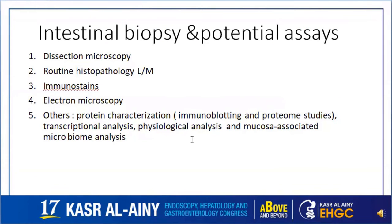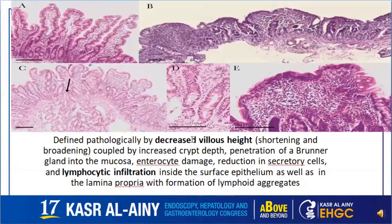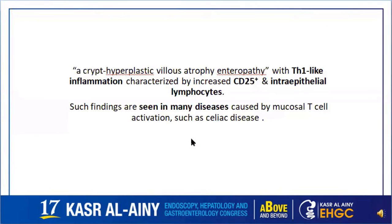Regarding diagnosis, a lot of potential assays can be carried out on small intestinal biopsies, with routine light microscopy being the cornerstone approach. The main histological findings are villus atrophy coupled with increased crypt depth, penetration of Brunner glands into the mucosa, enterocyte damage and reduction in secretory cells, and lymphocytic infiltration inside the surface epithelium as well as the lamina propria with formation of lymphoid aggregates. In summary, it is a crypt hyperplastic villus atrophy enteropathy with Th1-like inflammation characterized by increased CD25-positive intraepithelial lymphocytes.